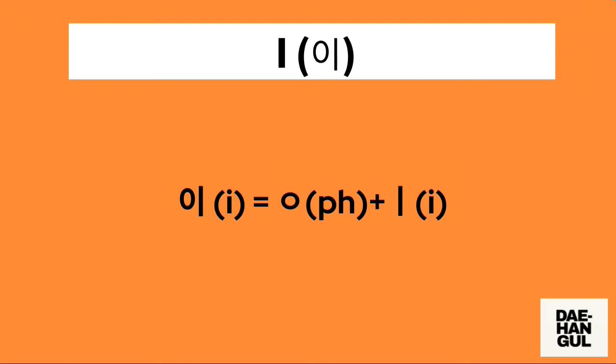This is composed of just two characters. The first character is a no-sound circle. Followed by a vertical line character. We just need to combine it to form the Hangul of the word I.